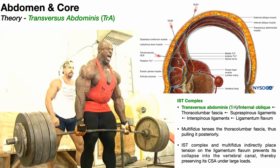Here we have a cross-section of the lumbar spine. Here's the vertebral body, here's the psoas major, and here are the erector spinae muscles with multifidus likely in there as well. Behind the vertebral body you can see the canal for the spinal cord — or further down, the cauda equina. This is a small space and we want to make sure it doesn't get compressed, especially if you're dead lifting 800 pounds.